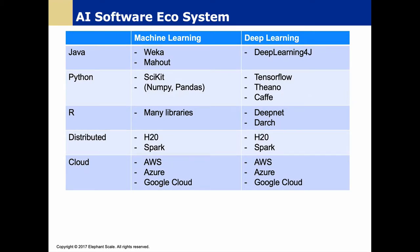Looking at the software ecosystem: different languages — Java, Python, R — are used. In this class we're focused mostly on Python. We'll be looking at scikit-learn for traditional machine learning, starting this week and next. For deep learning, there are a number of libraries, and TensorFlow is one we'll be looking at. Traditional machine learning libraries like scikit-learn are not deep learning libraries — they're mostly separate, though there is some overlap.